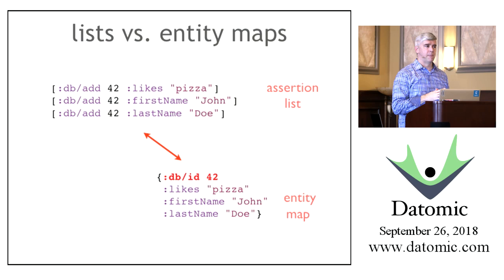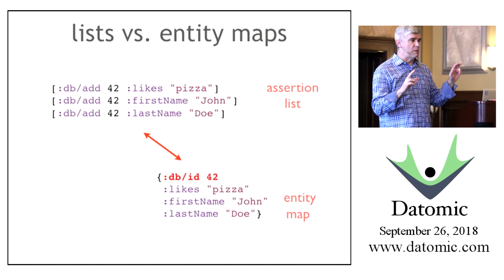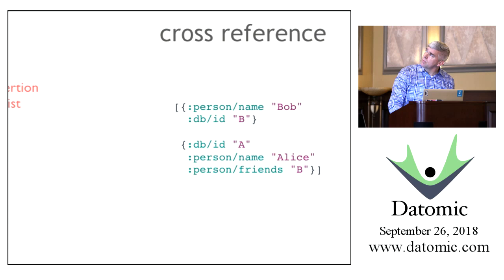What is the implication of this for unit testing? Do you need your database to do unit testing? Absolutely not. You might want your database for integration testing, for seeing things go end to end. But you never ever need a Datomic database to test making a transaction, because making a transaction is an operation that produces a piece of immutable data that you're going to then send to the database.